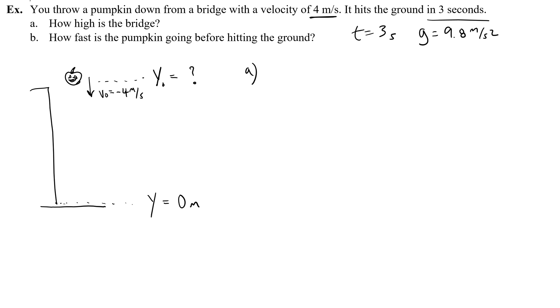So to figure out, for part a, how high the bridge is, I'm going to use this equation: y equals negative one half g t squared plus v naught t plus y naught, because it has all of those variables inside of it. Before I plug anything in, I'm going to get rid of anything that's zero, and then rearrange to solve for y naught, the thing that we're looking for. So the only thing that's zero is the final height, y equals zero.